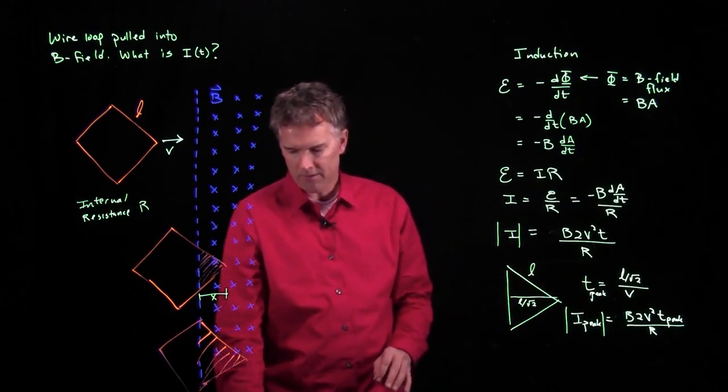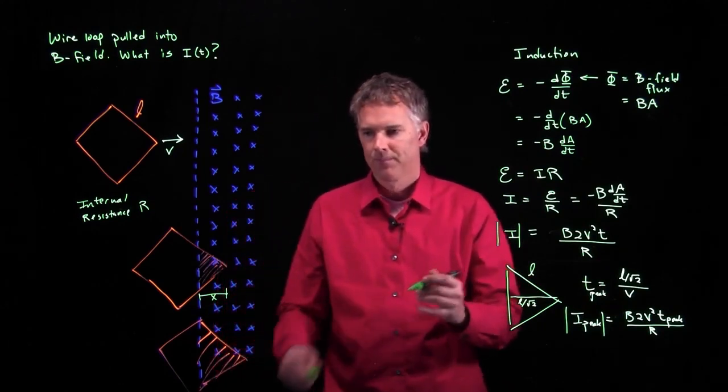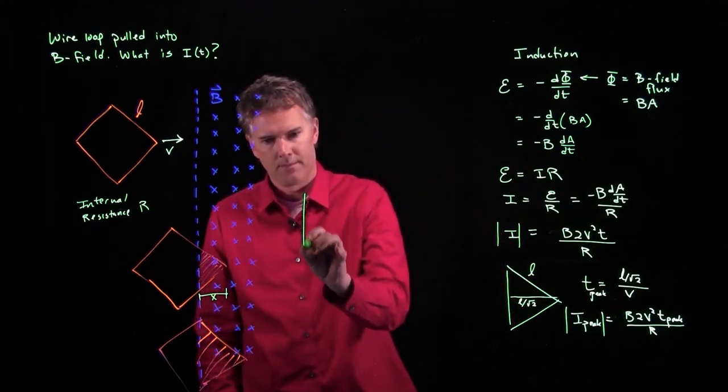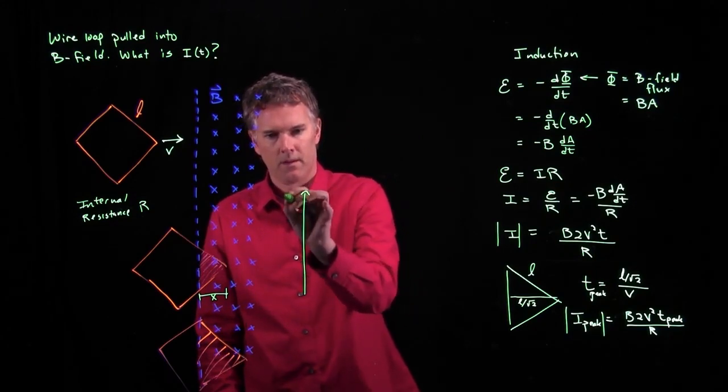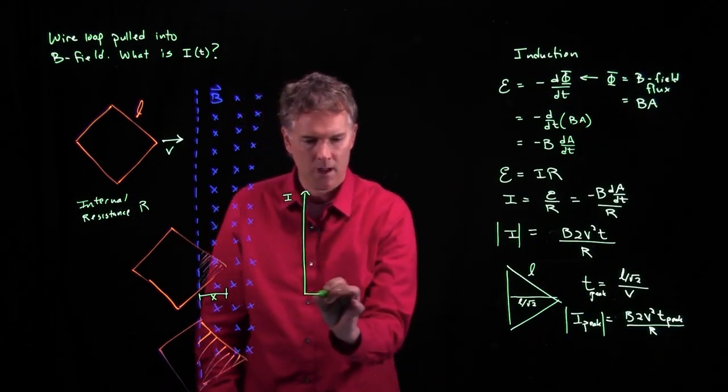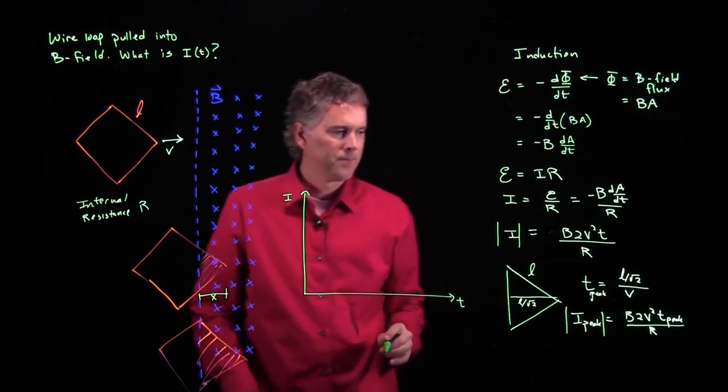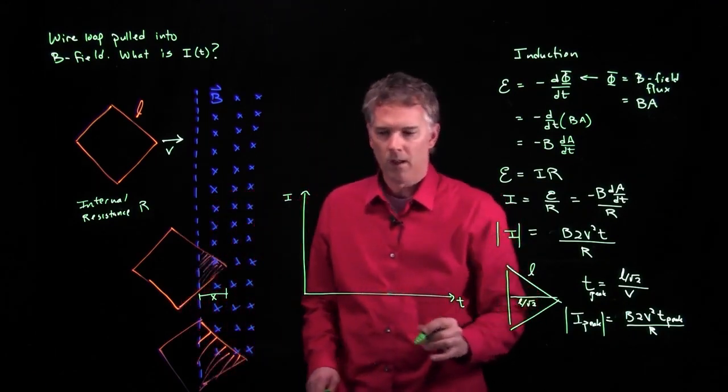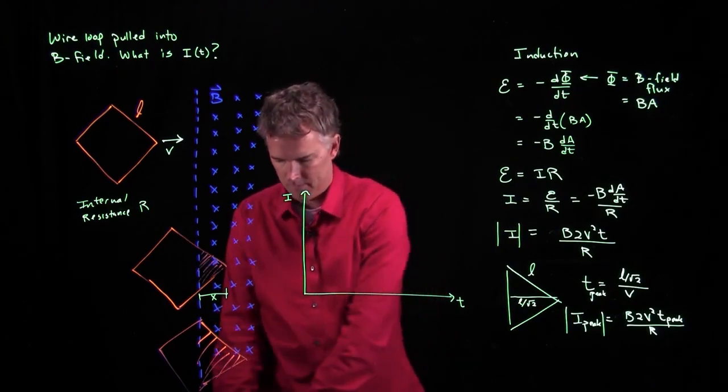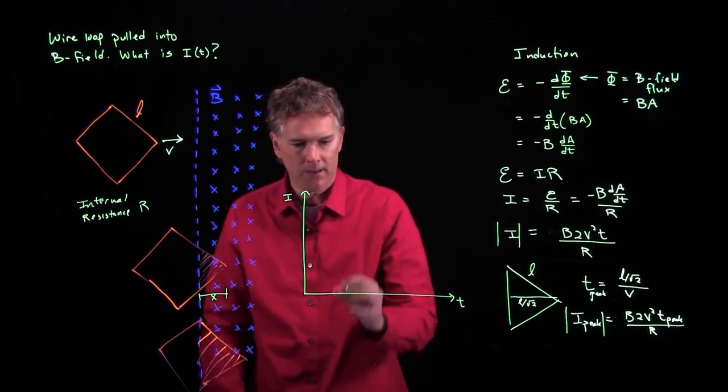And now you can plot this thing out as a function of time. Here's I. Here is T. And what does it look like? Well, it goes up until it hits I peak.